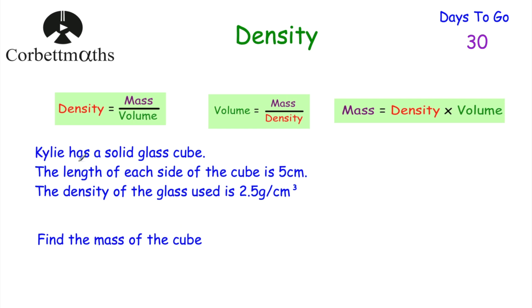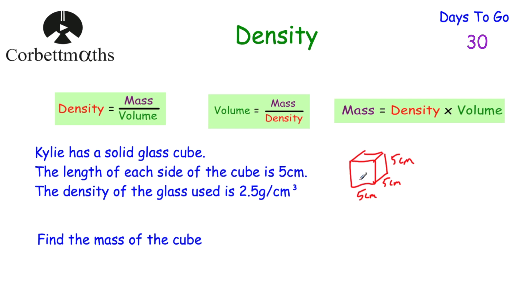Next question: Kylie has a solid glass cube where each side is 5 centimetres, and the density of the glass is 2.5 grams per centimetre cubed. Find the mass of the cube. First, find the volume: volume equals length × width × height = 5 × 5 × 5 = 125 centimetres cubed. We now know the volume is 125 centimetres cubed.